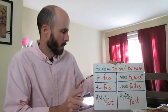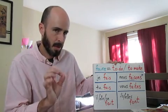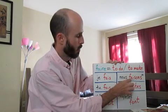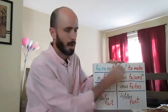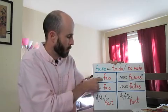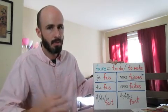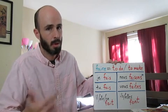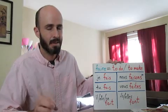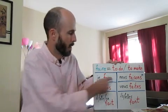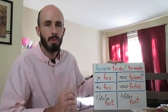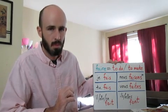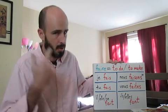I have one thing to point out, kind of an irregularity here. Notice we have in the nous form, faisons. Don't pronounce that A-I like you pronounce it elsewhere. Usually A-I in French makes an E sound, it can also be nasalized. But here, in the nous form of this verb, you pronounce nous faisons. That's something to keep in mind.